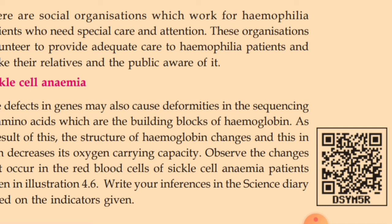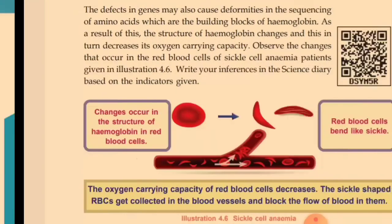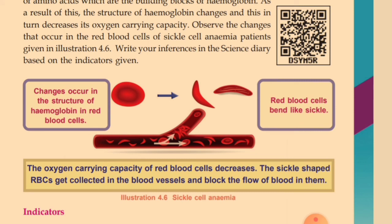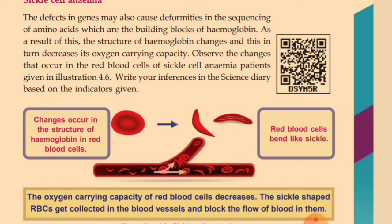The structure of hemoglobin changes, leading to a decrease in its oxygen carrying capacity. The structure of red blood cells also changes, causing red blood cells to become bent into a sickle shape. The sickle-shaped RBCs get collected in the blood vessels and block the flow of blood, preventing normal blood circulation. These are all about sickle cell anemia and the defects in the sequencing of amino acids in hemoglobin.